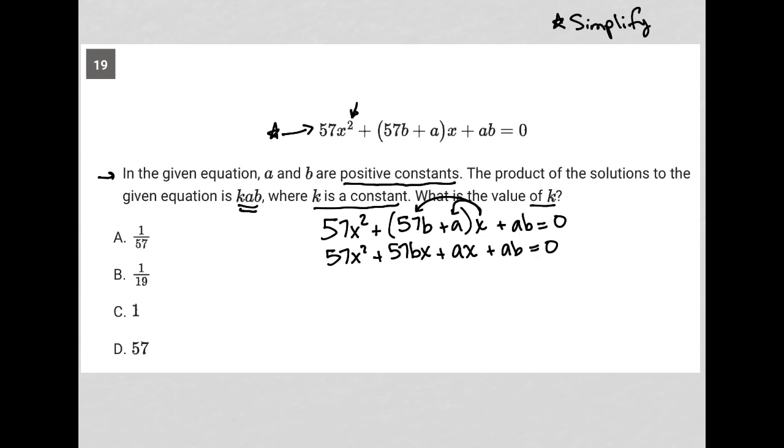So I have four terms. Anytime I have four terms with a quadratic, I like to think about factoring by grouping. Looks like I can do that. So if I group these two together and group these two together, I can factor them both separately.